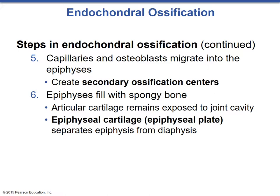The epiphyses will fill with spongy bone, and articular cartilage will remain on the exposed joint surface to reduce friction when two bones meet. The epiphyseal cartilage separates the epiphysis from the diaphysis at the metaphysis, and this region will grow later on during puberty.